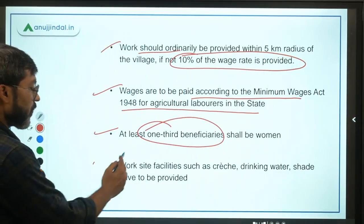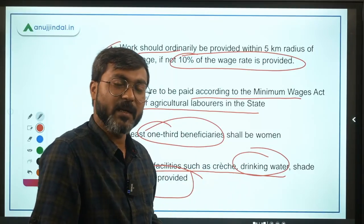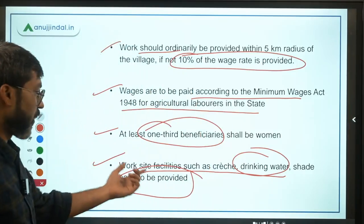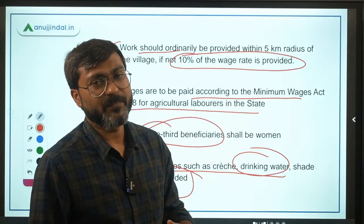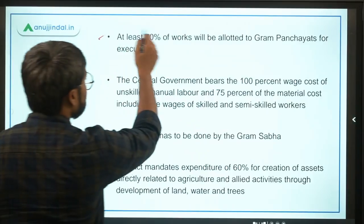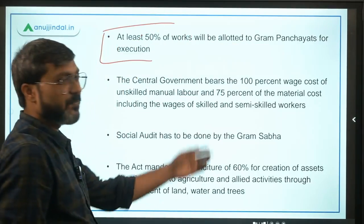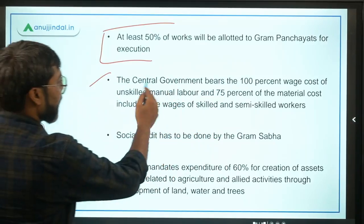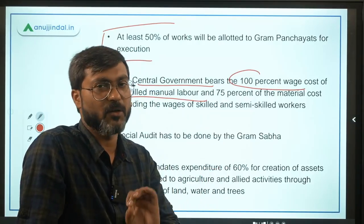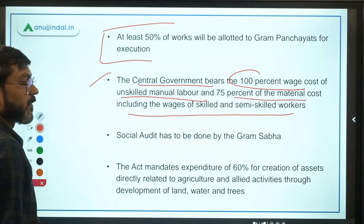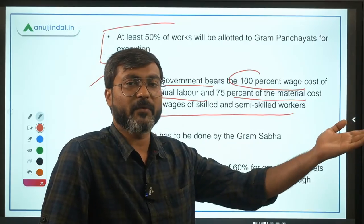Work site facilities such as crèche, drinking water, shade, and toilet facilities have to be provided — these are basic human necessities that must be ensured at work sites. At least 50% of work will be allotted to Gram Panchayats for execution. The central government bears 100% of the wage cost of unskilled manual labour. For material cost — including wages of semi-skilled and skilled workers — the central government bears 75%, and the rest is borne by the state government.